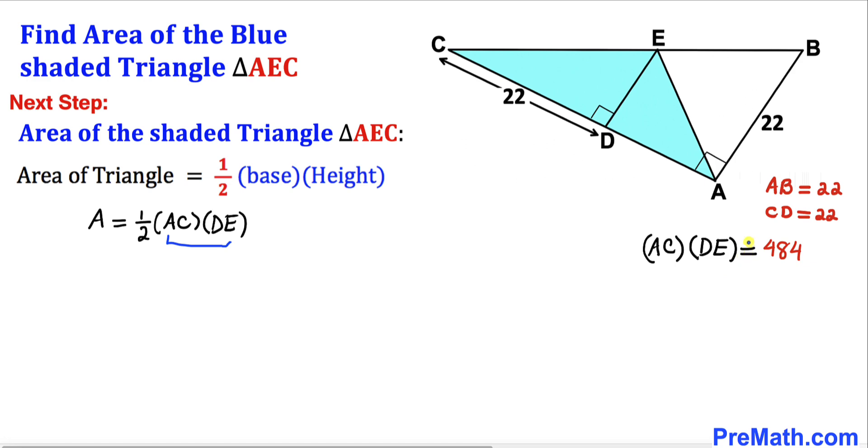Therefore, the area is going to be a half times 484, and if we multiply this, the area is going to be 242 square units.